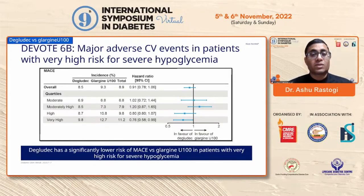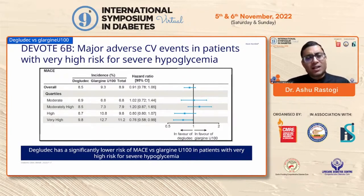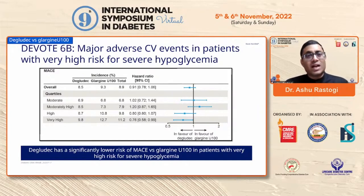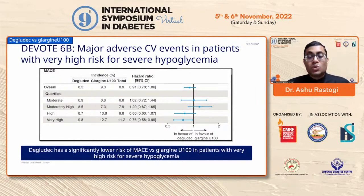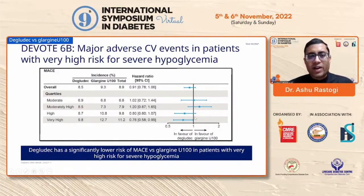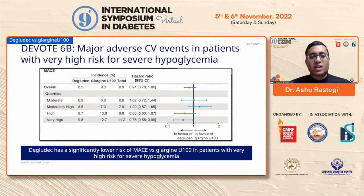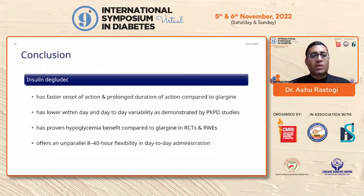The last data point covers the DEVOTE CVOT trial, which examined major adverse cardiovascular events (MACE). Just as we discuss CVOT trials for SGLT2 inhibitors, GLP-1 RAs, and DPP-4 inhibitors, we should consider insulin too. The DEVOTE study showed that overall MACE incidence was neutral — non-inferior — with degludec versus glargine U100. Importantly, in patients at very high risk of MACE, degludec showed a significantly lower risk, with a confidence interval of 0.76 (CI: 0.58–0.99), meaning degludec had significantly lower risk of MACE versus glargine U100 in patients at very high risk of severe hypoglycemia.